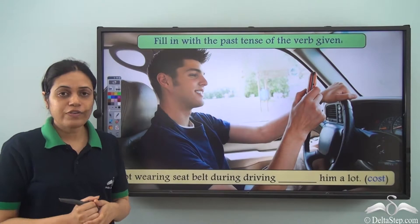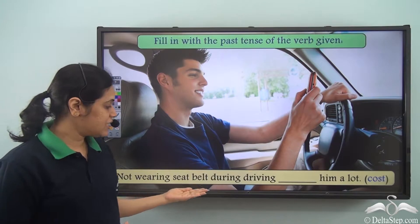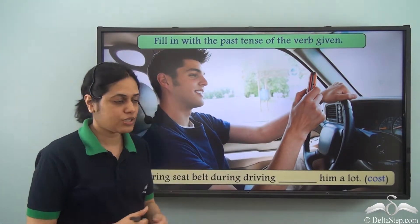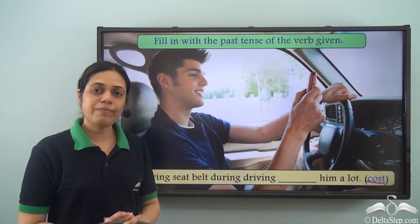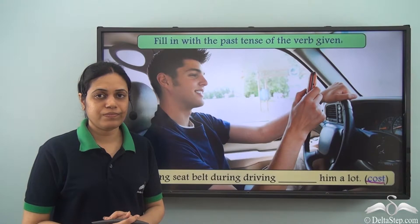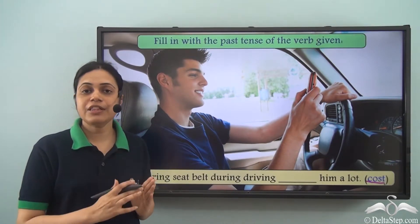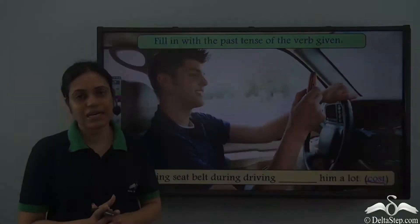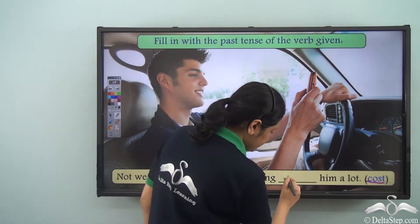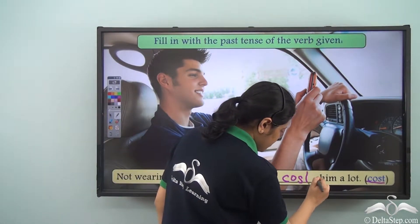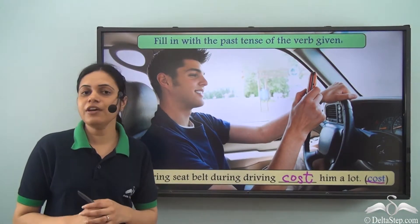Now we need to fill in with the past tense of the verb given. 'Not wearing a seat belt during driving, dash him a lot.' Cost is the verb. Cost is an irregular verb with all three forms the same, so the past tense of cost is cost. The answer: 'Not wearing a seat belt during driving cost him a lot.'